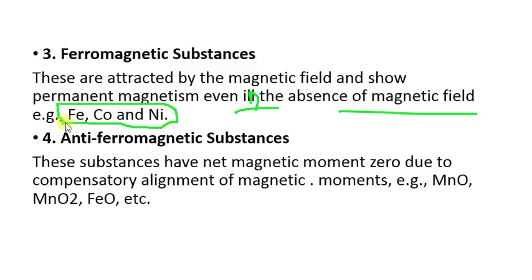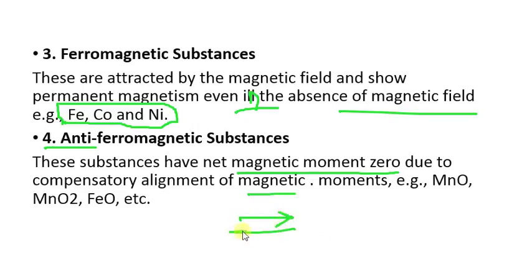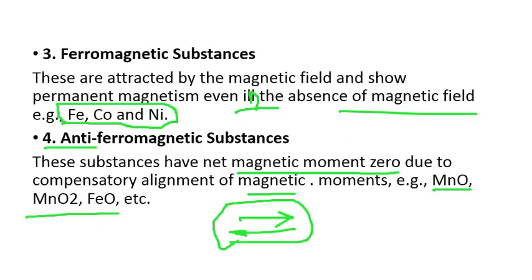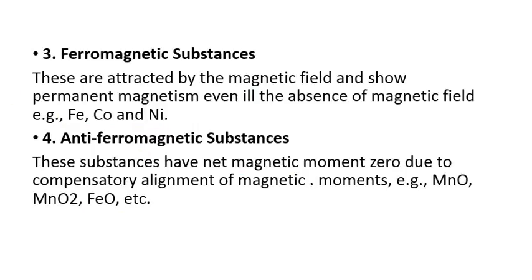In competitive exams they may directly ask for examples of ferromagnetic, paramagnetic, or diamagnetic substances — paramagnetic is very important and comes up frequently in molecular orbital theory questions. The fourth type is anti-ferromagnetic substances: they have a net magnetic moment of zero due to compensatory alignment of magnetic moments with opposite spins. Examples: MnO, MnO₂, Fe₂O₃, FeO, MgO.